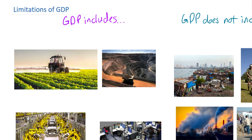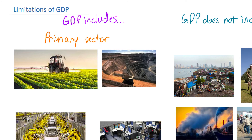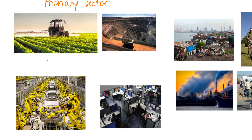Let's start by reviewing what GDP does include, what it does measure. On the left of the screen we have things that are definitely included in GDP — the value of the output of the different sectors of a nation's economy. The first two images, a farmer spraying chemicals over his crops and a giant mine, represent the primary sector — all things extracted from the earth or the sea. The next image of a modern factory and assembly line producing cars represents the secondary sector, the manufacturing sector. GDP includes all goods produced by the secondary sector of an economy.